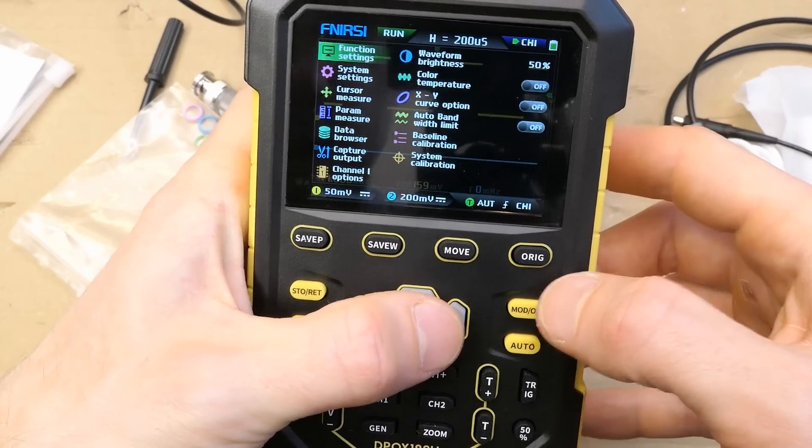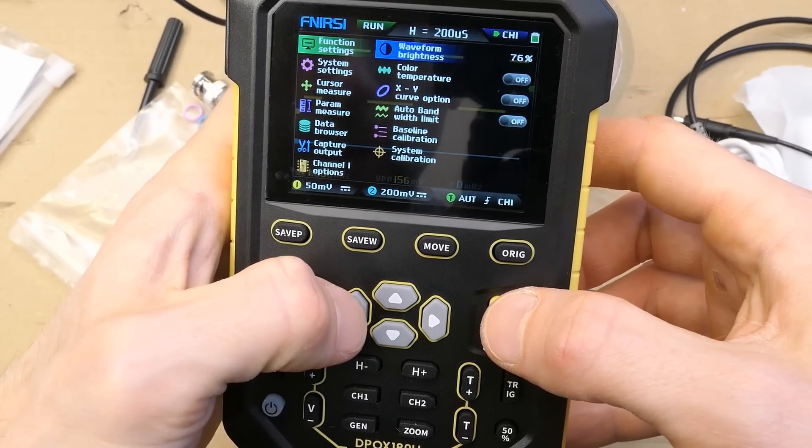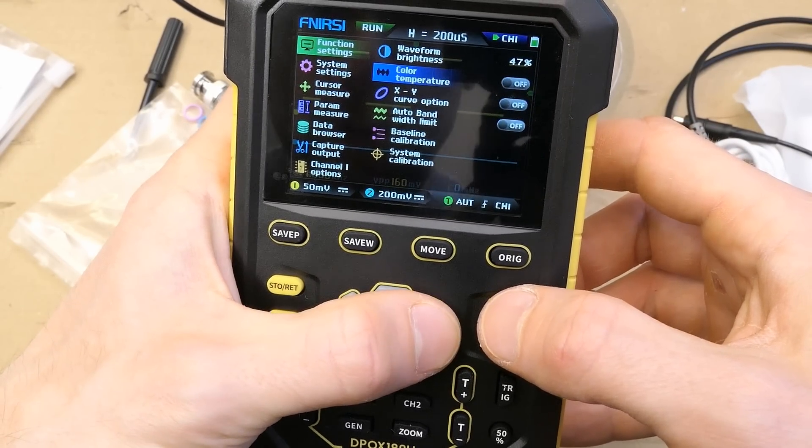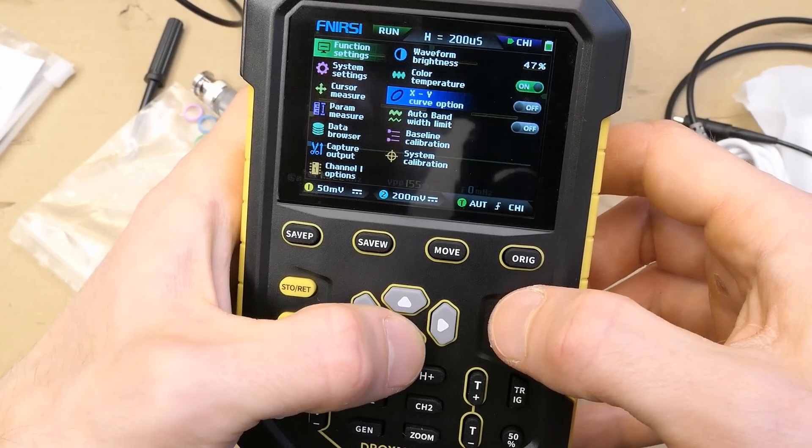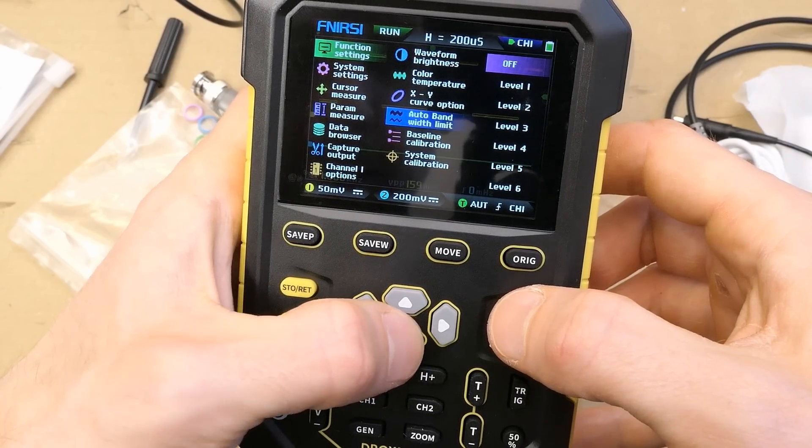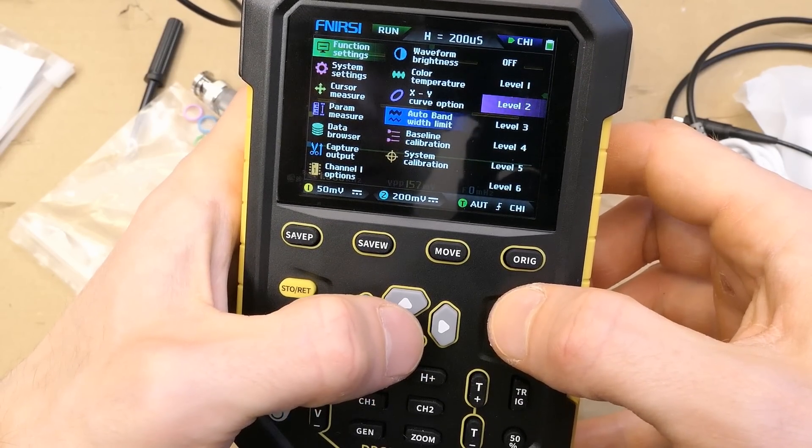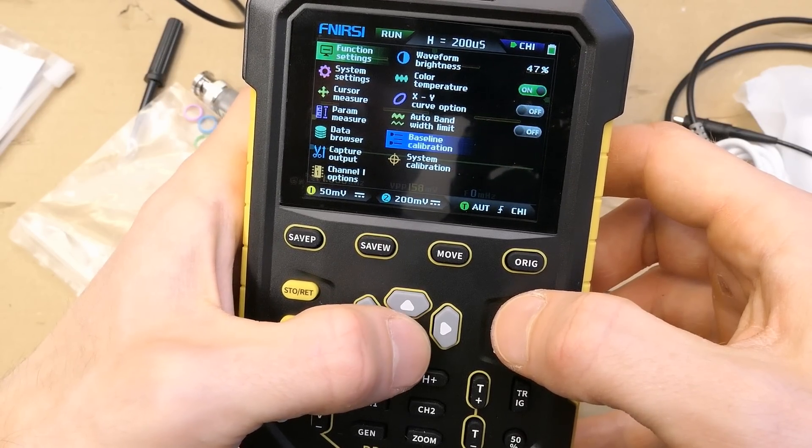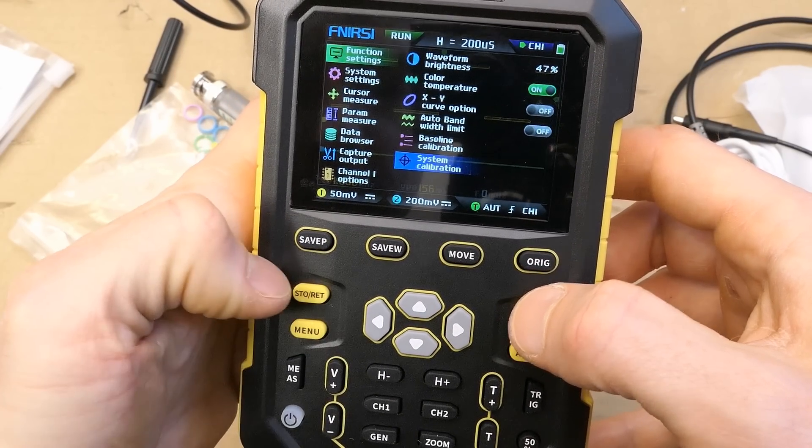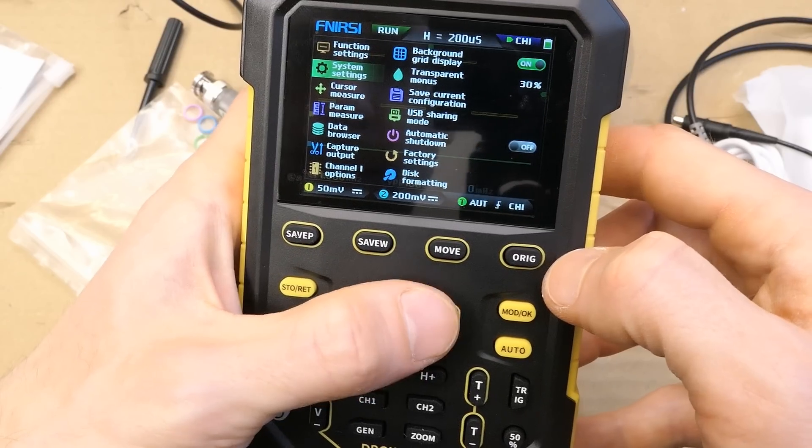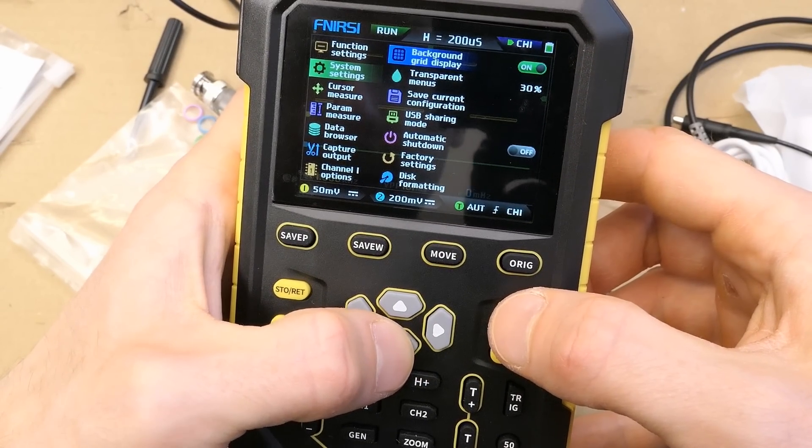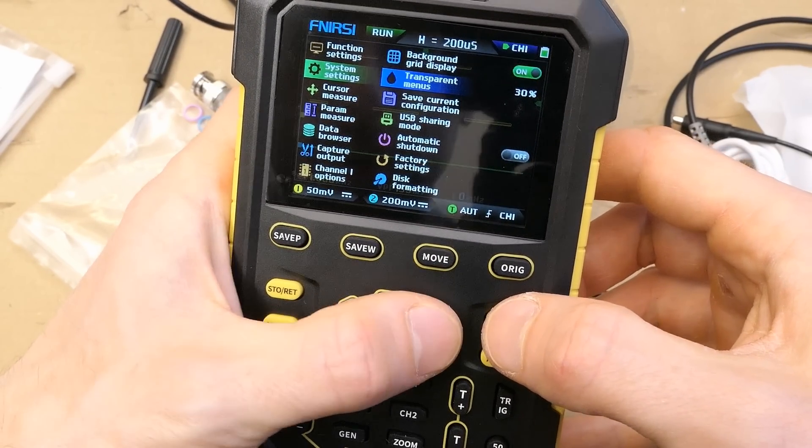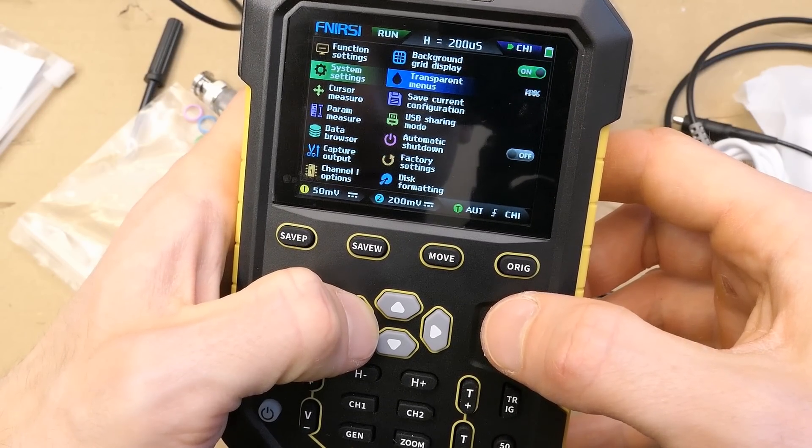Functions, waveform brightness, color temperature, XY mode, auto bandwidth limit, several levels here, baseline calibration, system calibration, this button is the return, system settings, background grid display, transparent menus, you can assess the transparency here, there's a lot of settings.